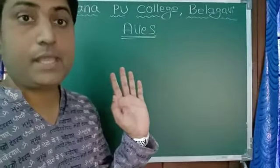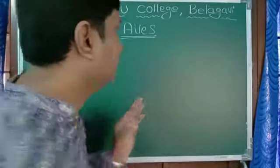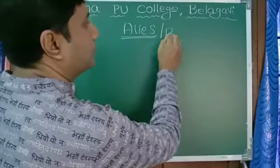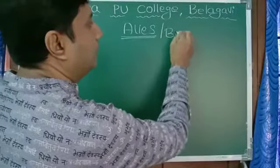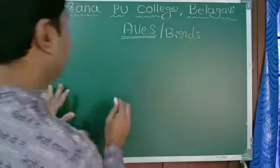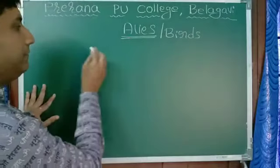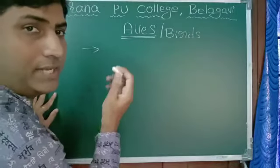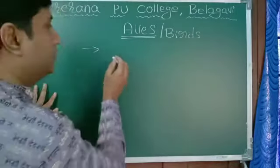Next is Aves, commonly called as birds. Now the characteristic features of birds: birds do not have teeth; instead of teeth they have a beak. Beak is present in them.